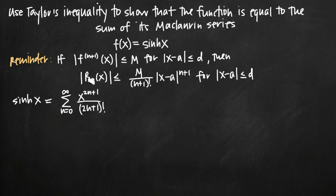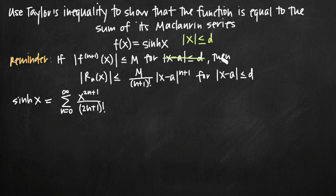The way we're going to do that is by attacking Taylor's inequality one piece at a time. Taylor's inequality tells us that if the absolute value of the (n+1)th derivative of the function is less than or equal to some number M, for the absolute value of x minus a less than or equal to d, then the remainder term satisfies a corresponding inequality for |x−a| ≤ d.